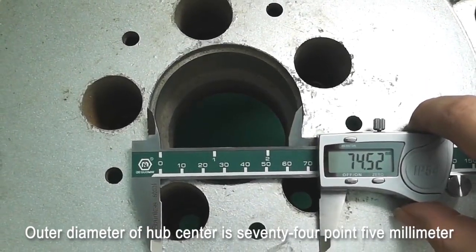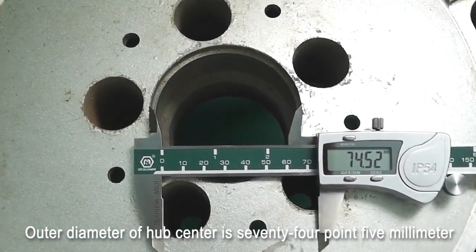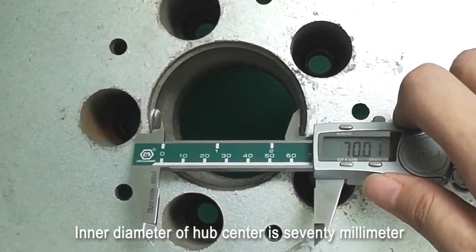Outer diameter of hub center is 74.5 mm. Inner diameter of hub center is 70 mm.